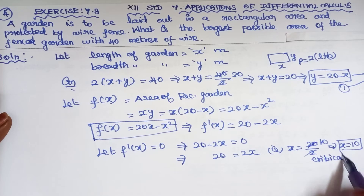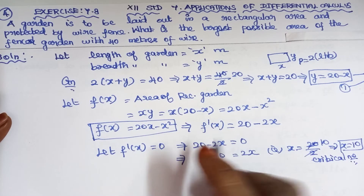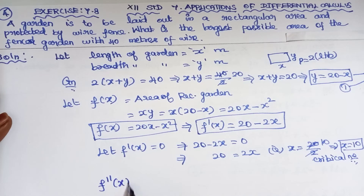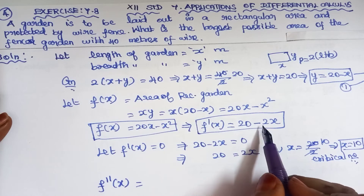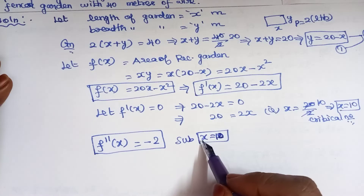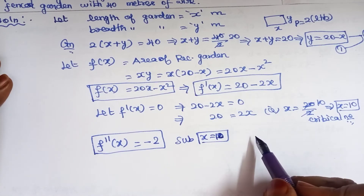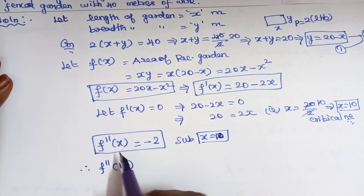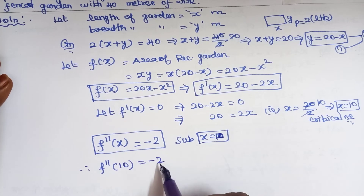Now find the second order derivative to check whether this critical number gives a maximum or minimum. Differentiating f dash of x: f double dash of x equals minus 2, which is a constant. Substituting x equal to 10 in f double dash of x gives minus 2.